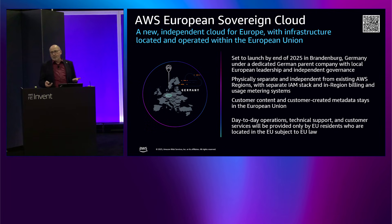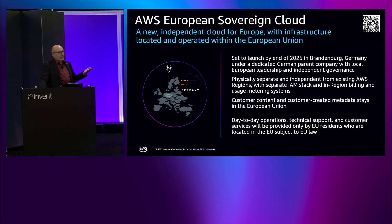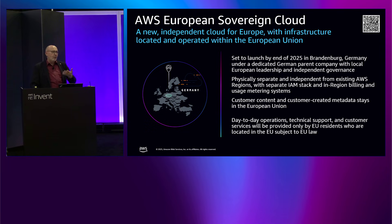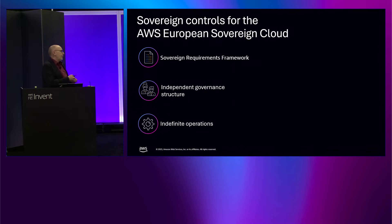The European Sovereign Cloud is set to launch by the end of 2025. It will be a physically separated region, with the first region starting in Brandenburg, Germany, pretty close to Berlin. We are creating a completely new partition with quite a lot of additional components. Importantly, it's not only customer content staying within the region — we're also ensuring all customer-created metadata stays in the European Union, and we're doing completely day-to-day operations with people from local entities on European ground.